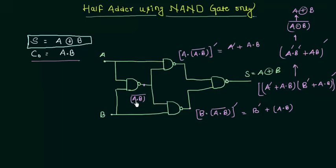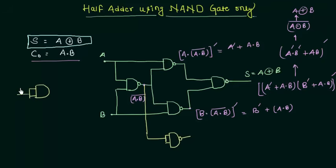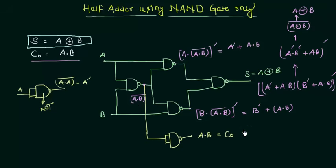At this point in the circuit, A AND B complement is already present. So the only thing we need to do is take its complement again to get A AND B. We take the output of the first NAND gate and send it into another NAND gate configured as a NOT gate — when both inputs are the same signal A, it gives A AND A complement, which equals A complement by Boolean algebra. So this acts as a NOT gate, and complementing A AND B complement gives us A AND B, which is our carry output.